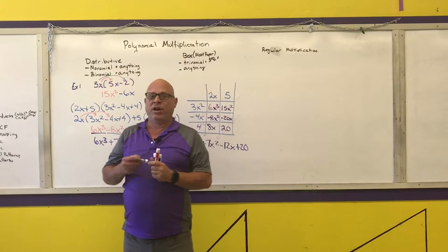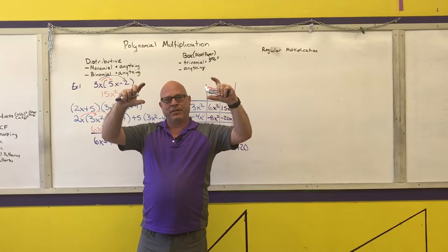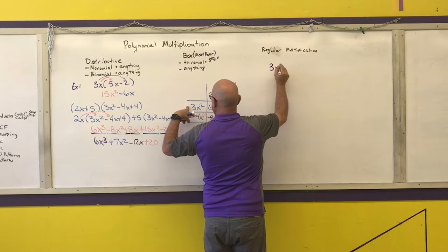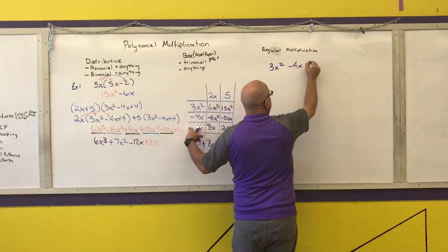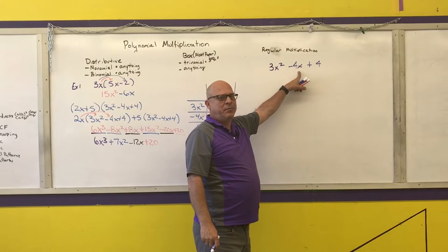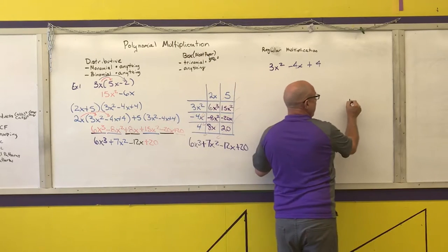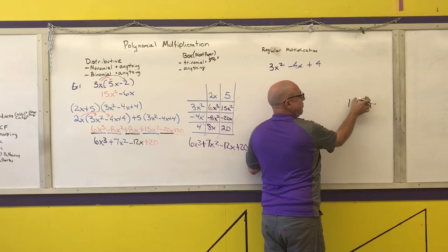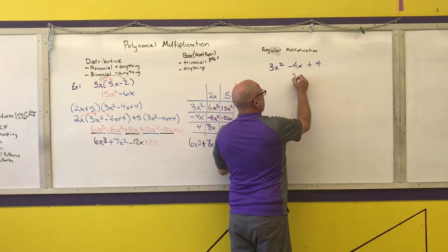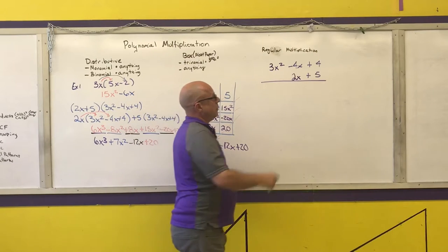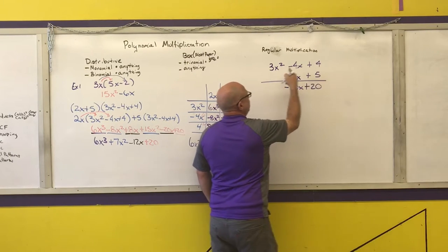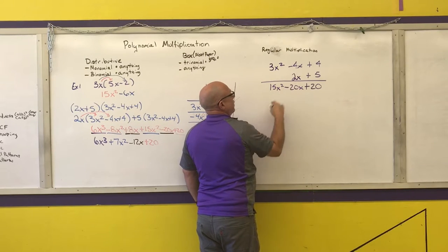The last method is regular multiplication. I'm going to write the polynomial with the most terms on top and the other polynomial below it, just like regular multiplication. The one with the most terms is 3x² minus 4x plus 4. If there's a missing term, leave a blank as a placeholder — just like the zero in 101 represents zero tens. Then below I write 2x plus 5, and now I just do regular multiplication: 5 times 4 is +20, 5 times −4x is −20x, 5 times 3x² is 15x².